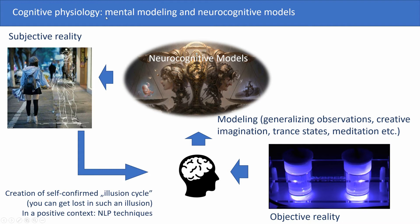We start with cognitive psychology, mental modeling, and neurocognitive models. Our brain uses sensor data from objective reality for modeling — for instance, for generalizing observation, for creating creative imagination, for trance states, meditation, and all mental efforts that generate cognitive and neurocognitive models. They are called neurocognitive because they integrate our experience and we can generate new experience based on those models. They process, store, and use different sensing and actuating components from our behavior.